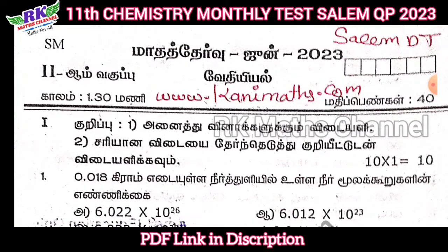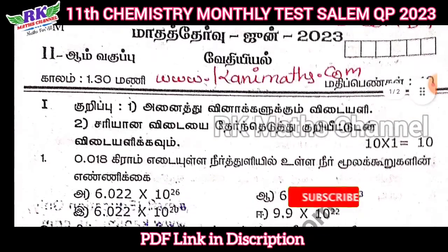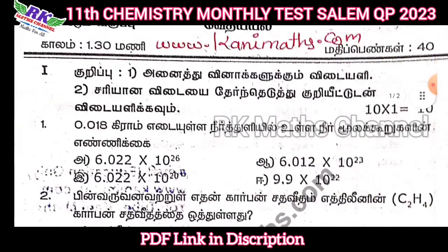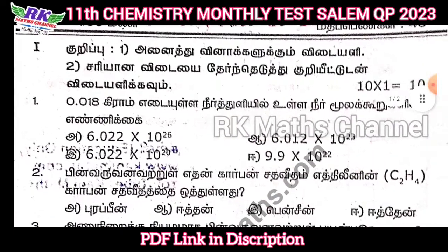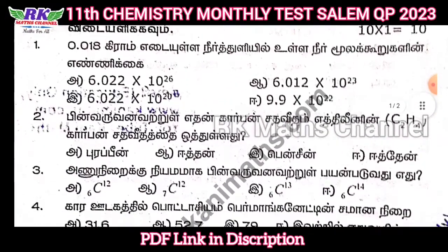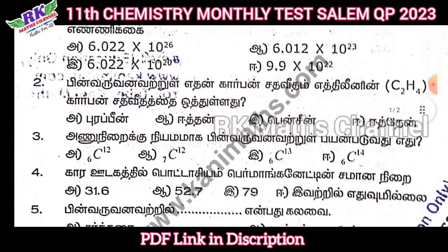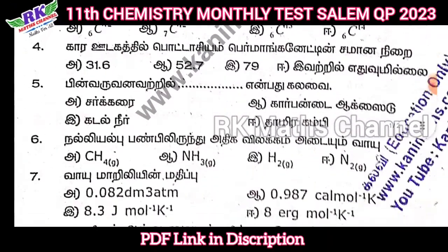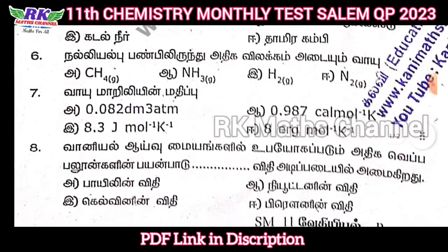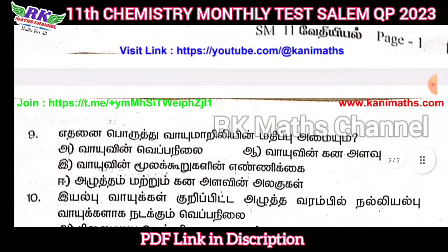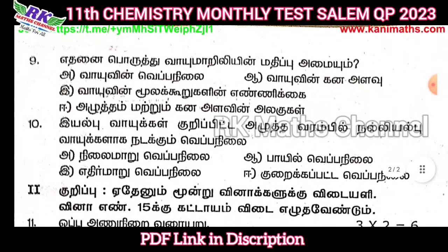Let's see — if you look at this exam, the total is 40 marks. First, you have 11 one-mark questions, so the total for that section is 11 marks.